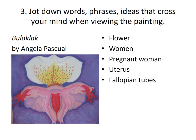Fallopian tubes — the bodies of the women resemble the fallopian tubes. You have ovaries, which are the hair of the women. Then, you might also see a wine glass. So, earlier we mentioned the uterus or the womb, but it also resembles a wine glass. Write it down.